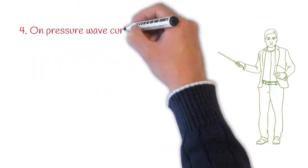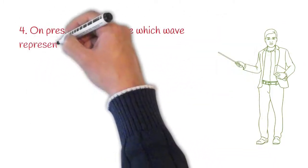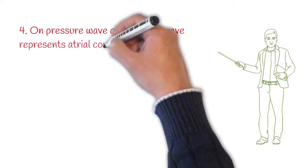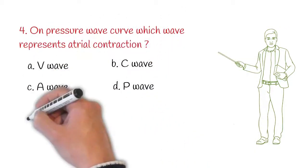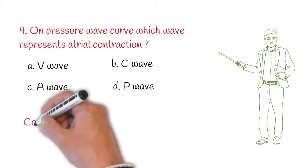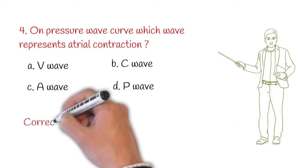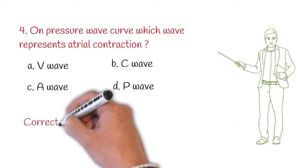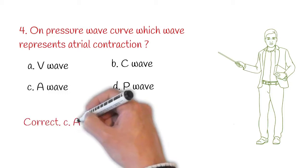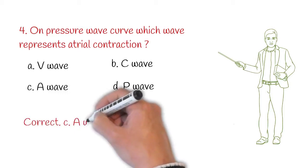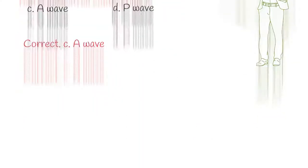Next question: on the pressure wave curve, which wave represents atrial contraction? Option A: V wave, option B: C wave, option C: A wave, option D: P wave. Correct answer: C — the A wave represents atrial contraction on the pressure wave curve.